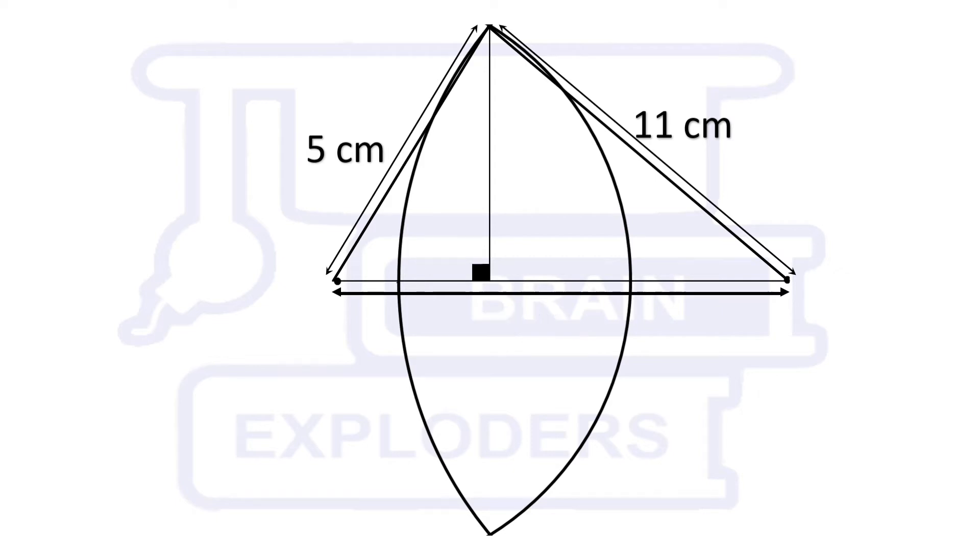This altitude divides the triangle into two right angled triangles. Let height of the triangle is h and basis of the triangles have lengths x and 12-x cm.